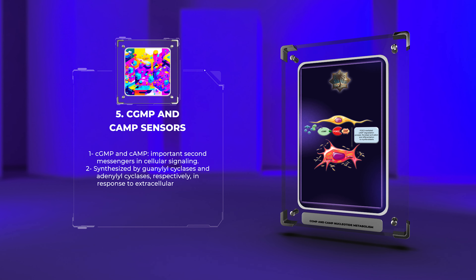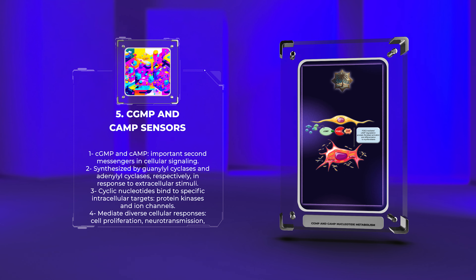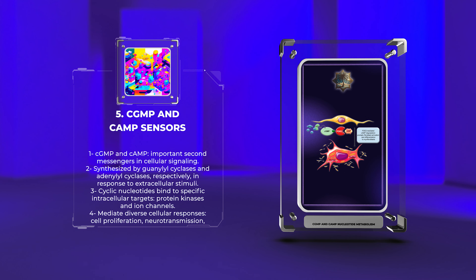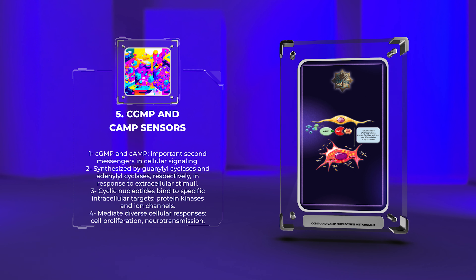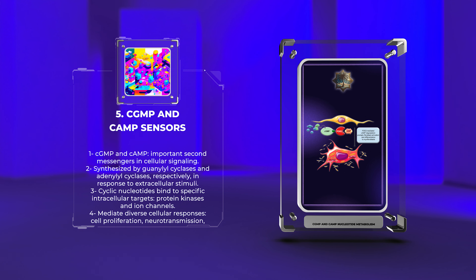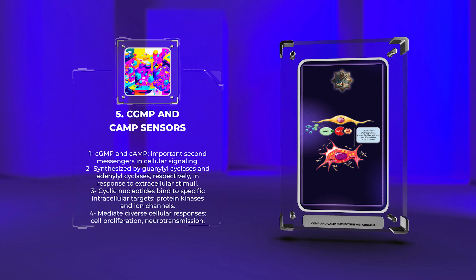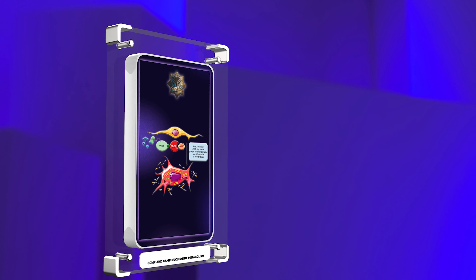Cyclic guanosine monophosphate (cGMP) and cyclic adenosine monophosphate (cAMP) serve as important second messengers in cellular signaling. They are synthesized by guanyl cyclases and adenyl cyclases, respectively, in response to various extracellular stimuli. These cyclic nucleotides bind to specific intracellular targets, such as protein kinases and ion channels, to mediate diverse cellular responses. Understanding their functions and regulation is essential for comprehending fundamental processes like cell proliferation, neurotransmission, and hormone signaling.